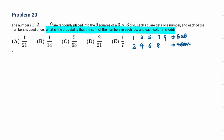For the sum to be odd, we need either: even plus even plus odd equals odd, or odd plus odd plus odd equals odd. Those are the two cases.